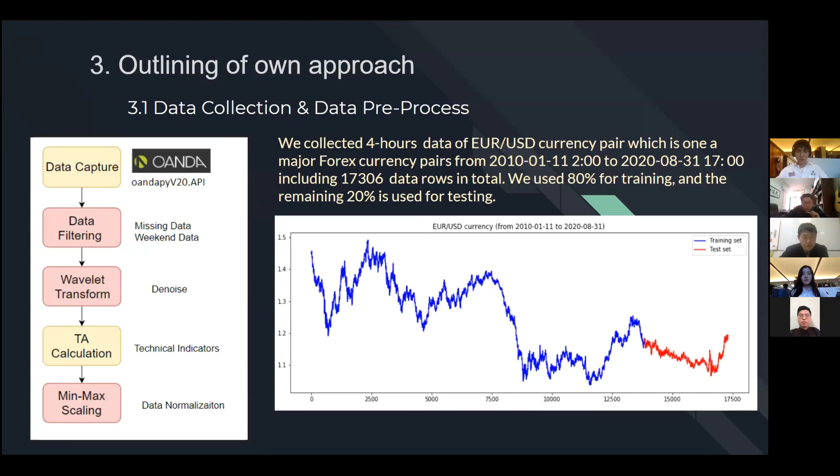Let's look at the data pre-processing step. Firstly, we capture the currency data from inter platform using API. Then we filter the missing data and weekend data. The next step is denoising the data using wavelet transform. And then we use the TA lab to calculate the technical indicators. The final step is doing the min-max normalization. On the right side, it is a visualization of our data set. We collected four hours data of EUR USD currency pair from 2010 to 2020. It is a 10 years data set and it has nearly 17,000 data rows. It is a regression problem. And we use 80% of the data for training and 20% for testing.